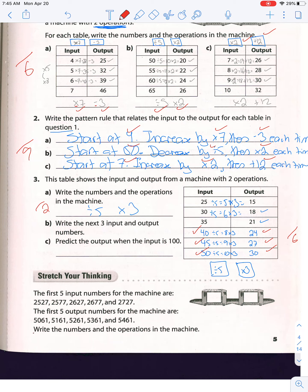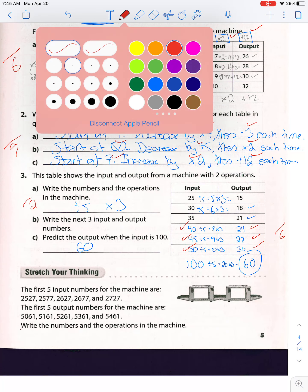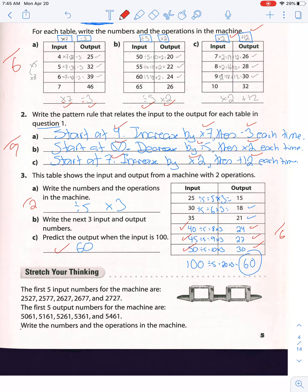The best part: predict the output when the input is 100. When the input is 100, divide by 5 gives 20, and 20 times 3 is 60. So 60 is the answer — one well-earned mark. Good job, that is that.